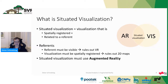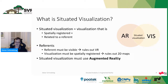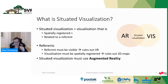That brings us to situated visualization: a visualization that is both spatially registered — as in the virtual reality case — but also related to a referent. This is best implemented by combining augmented reality with visualization, which is what I call situated visualization. I didn't invent the term — that was Sean White a couple of years ago. There's a good argument why situated visualization has to happen in augmented reality: the referent must be visible, which basically rules out virtual reality where you can't see the real world; and the visualization must be spatially registered in a 3D embedding in the environment.